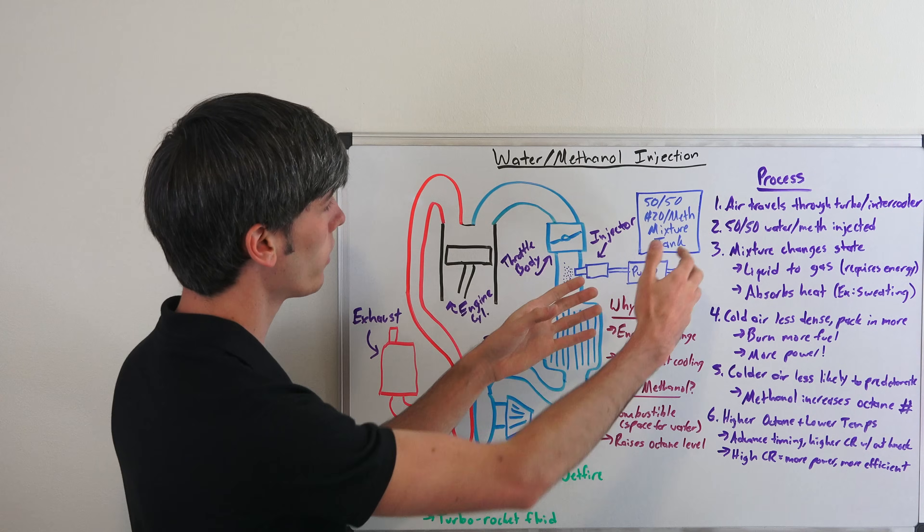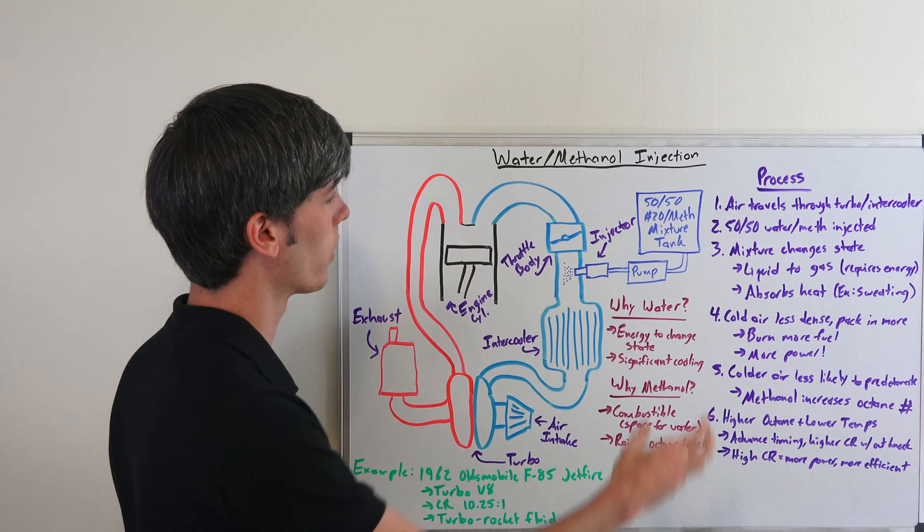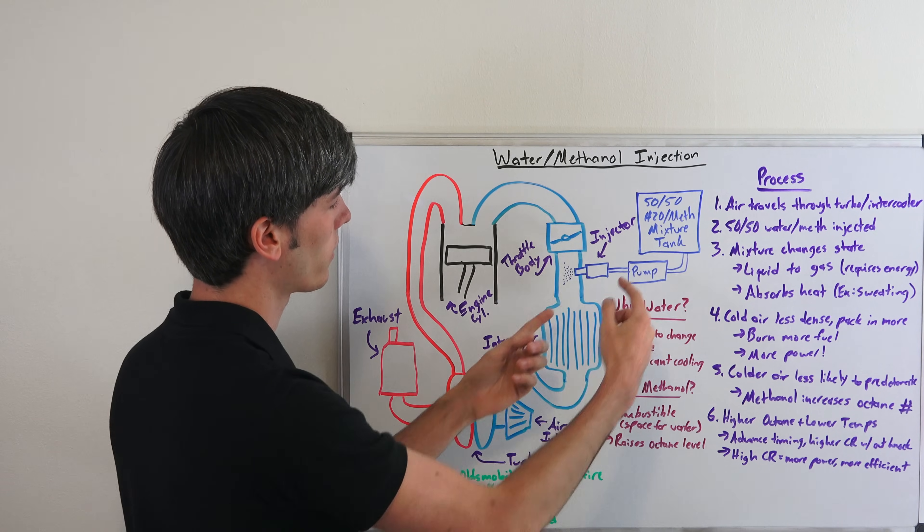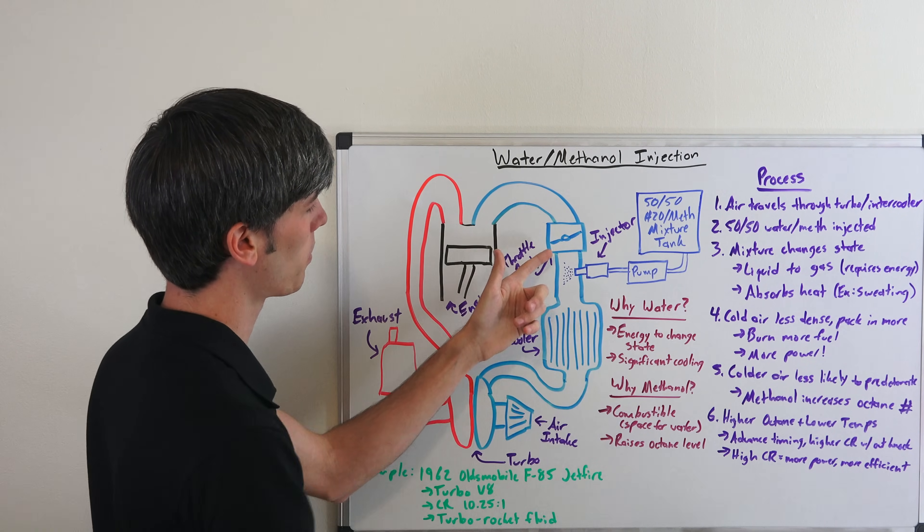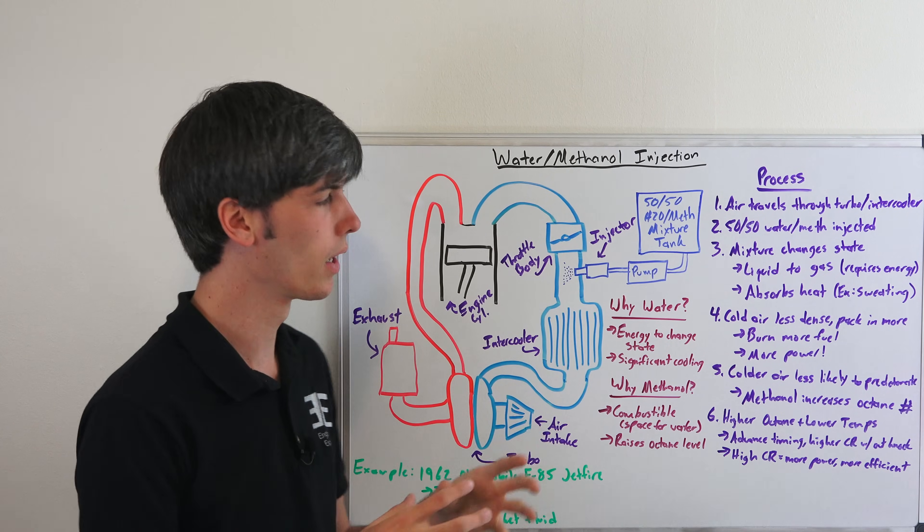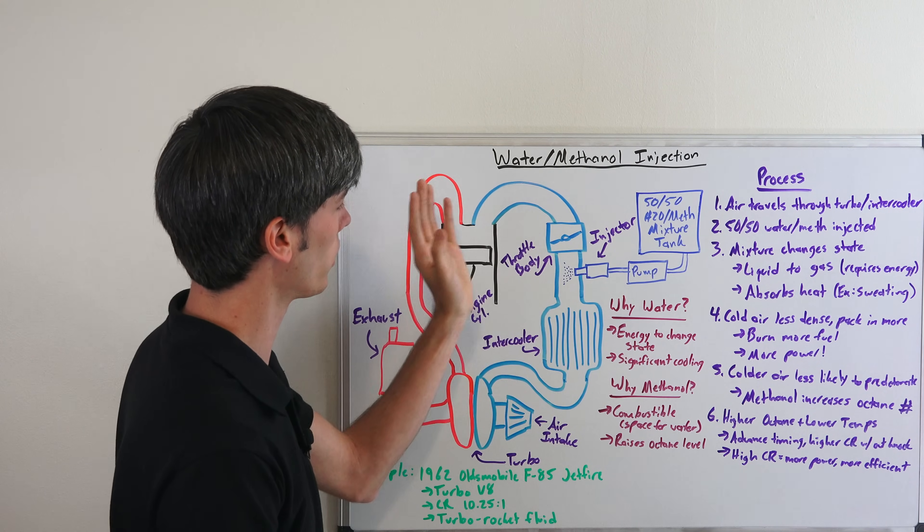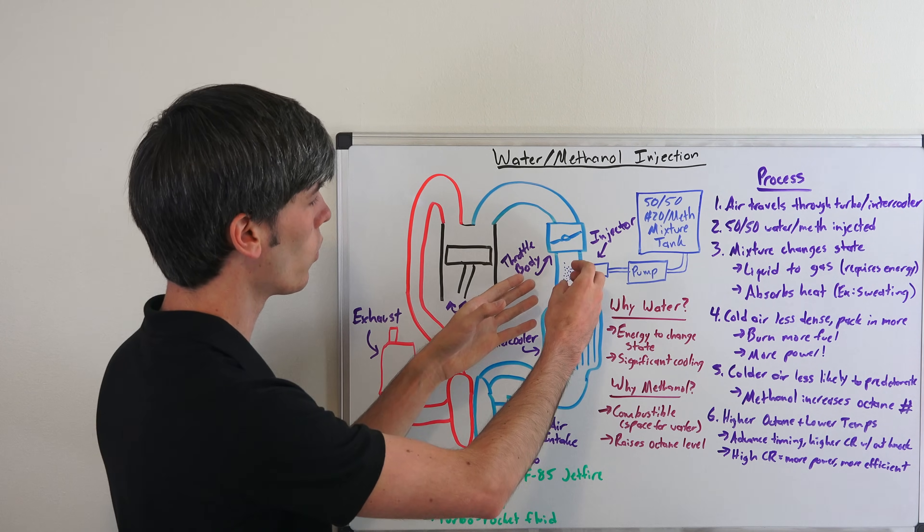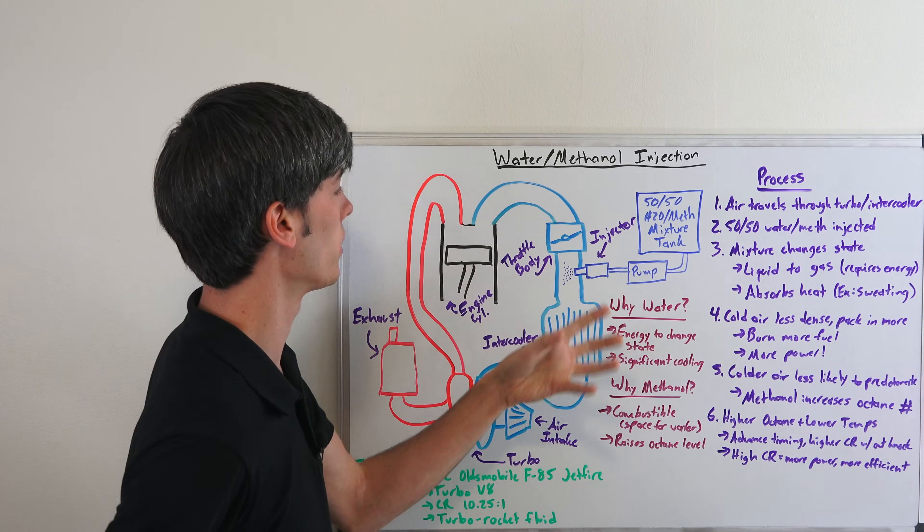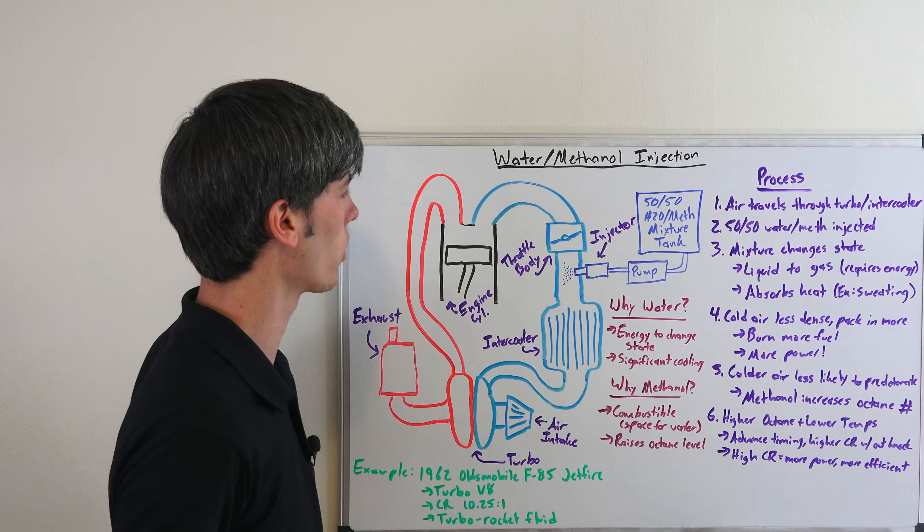Here on the side what we've added to this system is this water methanol mixture. We have this tank here with a 50-50 solution that's going to be sprayed in just before the throttle body. You don't want to be spraying it before the intercooler because you could condense that vapor in there. You want a fine mist of this water and methanol that'll essentially evaporate and vaporize into this system before it goes into the engine.